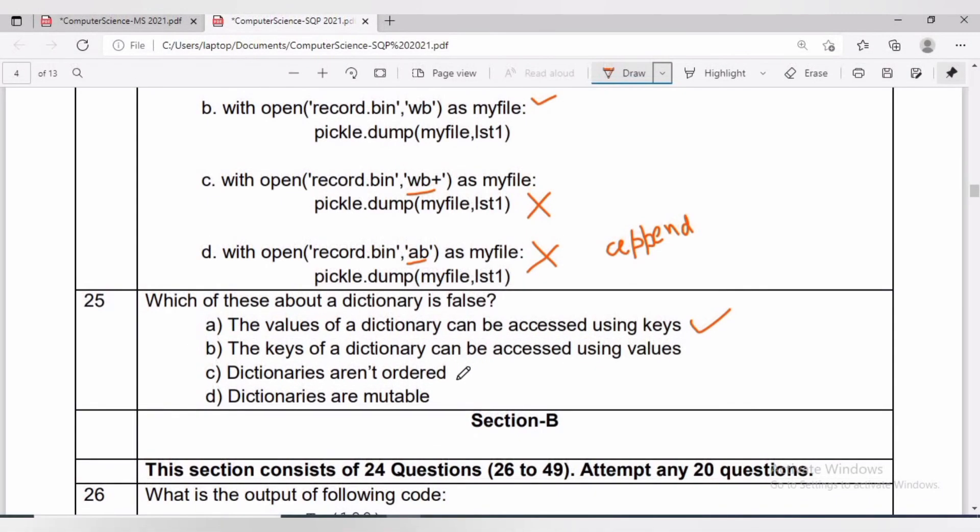Option B will be the right answer: the keys of a dictionary can be accessed using values. Now we'll check the answer.